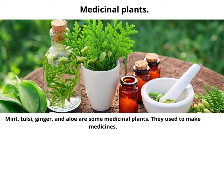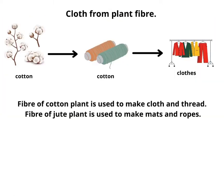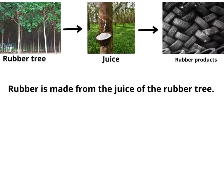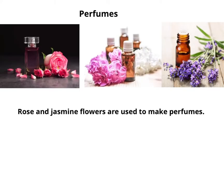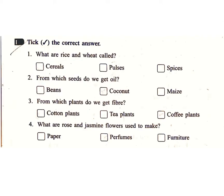Medicinal plants: Mint, tulsi, ginger and aloe are some medicinal plants used to make medicines. Cloth from plant fiber: The fiber of the cotton plant is used to make cloth and thread. The fiber of the jute plant is used to make mats and ropes. Rubber is made from the juice of the rubber tree. Rose and jasmine flowers are used to make perfumes.